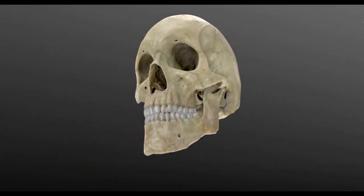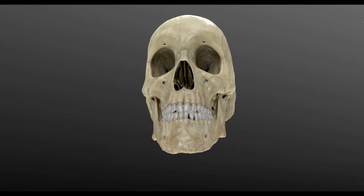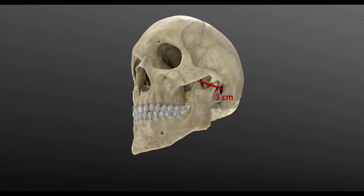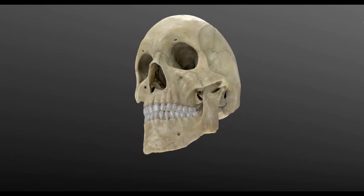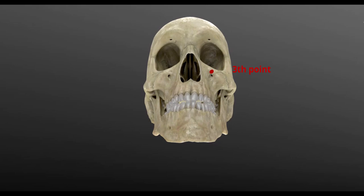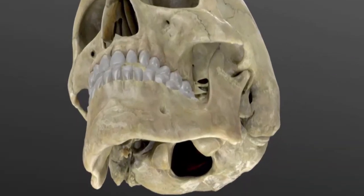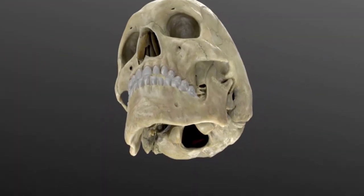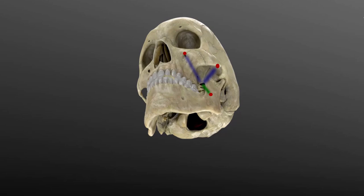Hartel's anatomic landmarks are used for skin entry and needle trajectory. The skin entry point is 2.5 cm lateral to the corner of the mouth. The second point is 3 cm anterior to the external auditory canal. The third point is the medial ipsilateral pupil. The needle trajectory is aimed at the intersection of two planes: one sagittal plane passing through the ipsilateral pupil, and a coronal plane 3 cm anterior to the external auditory meatus.